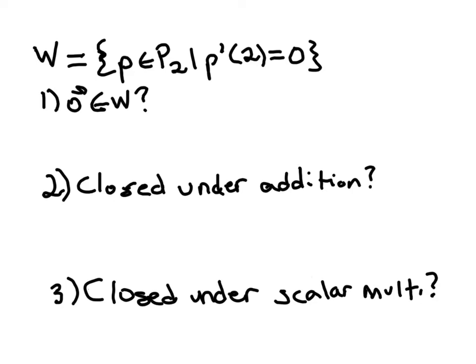So in part A, W is described as a collection of polynomials in P2, so that's the polynomials of degree less than or equal to 2, such that the derivative of P at 2 is 0.